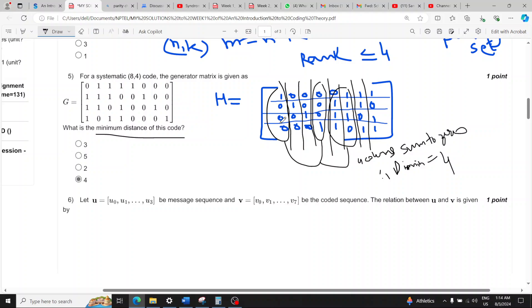So use the shortcut method. This explanation I'm not giving, the lectures give the explanation to how to answer this, but simply the method is that you sum up the minimum number of columns of H to zero. If that happens then that is the minimum distance. So that is four.